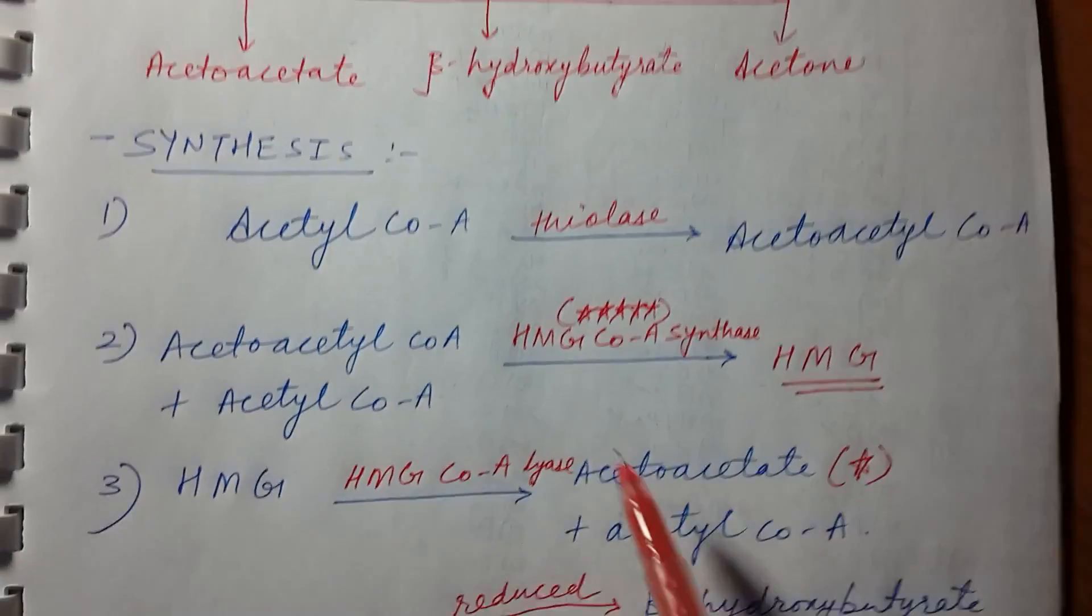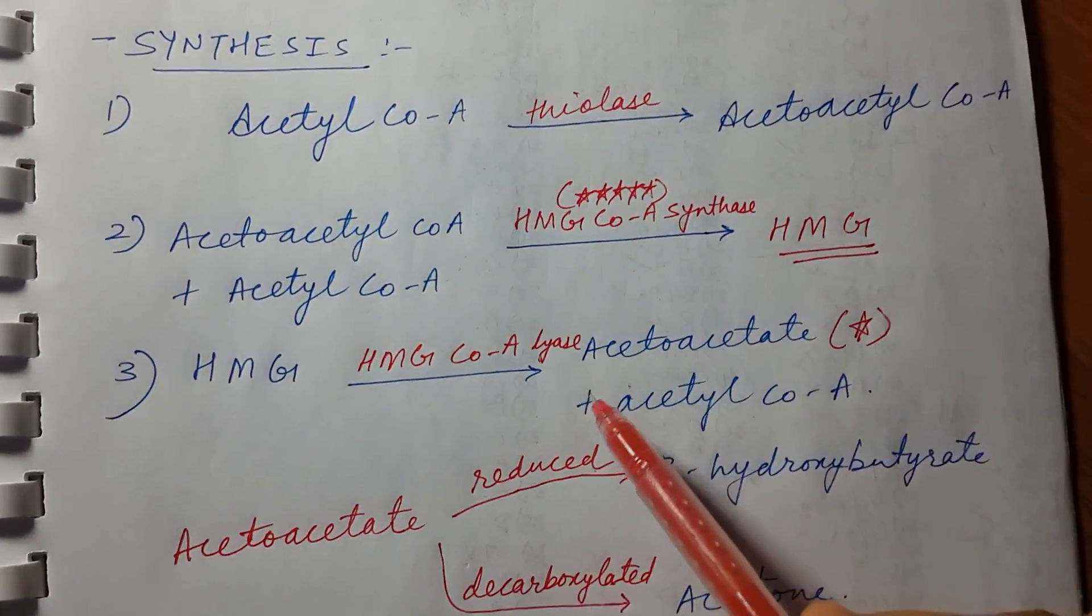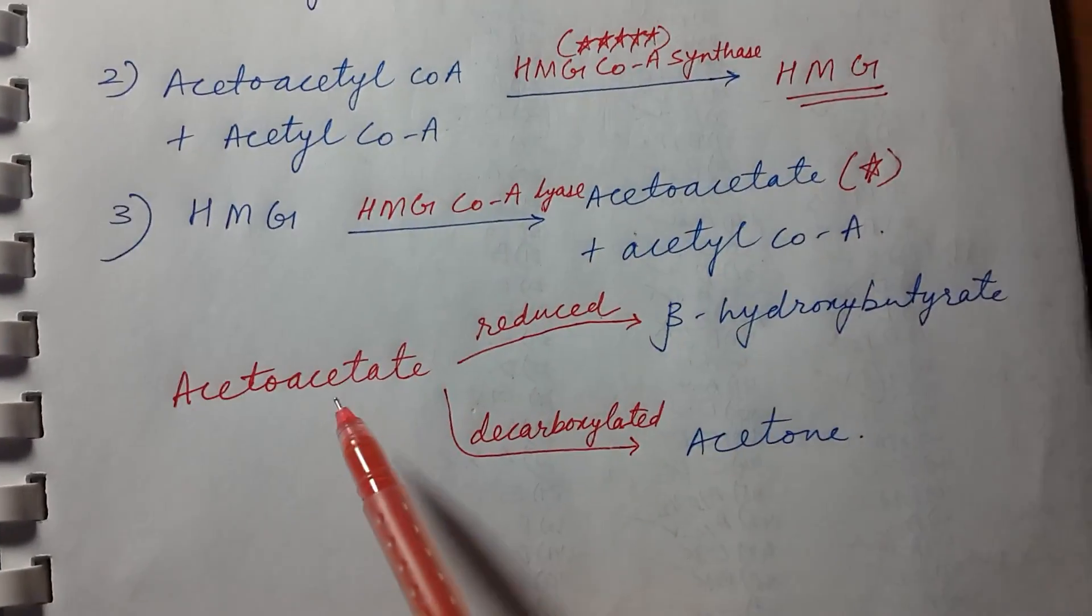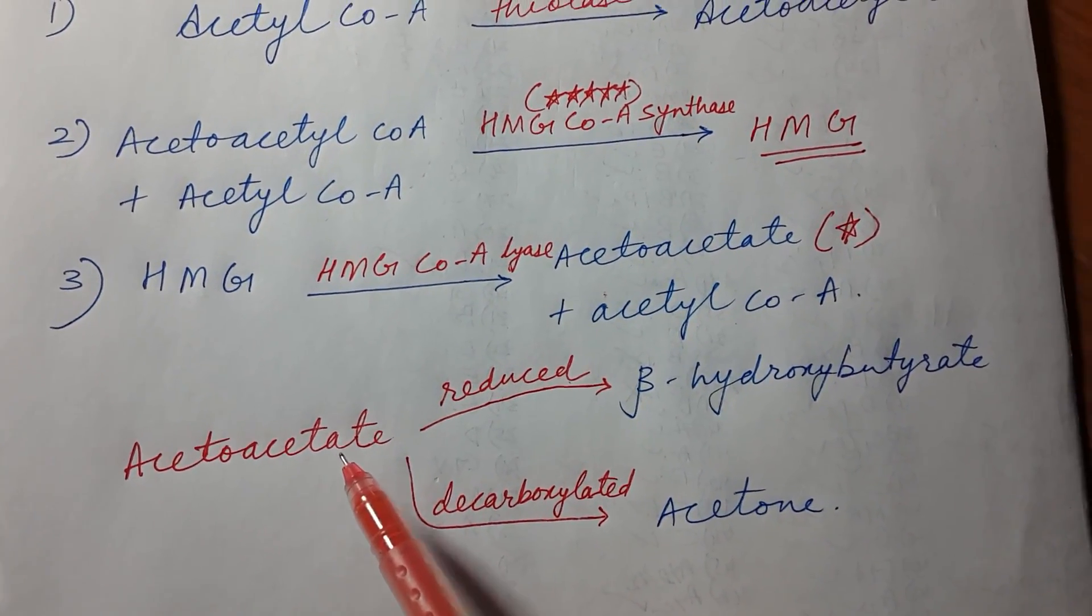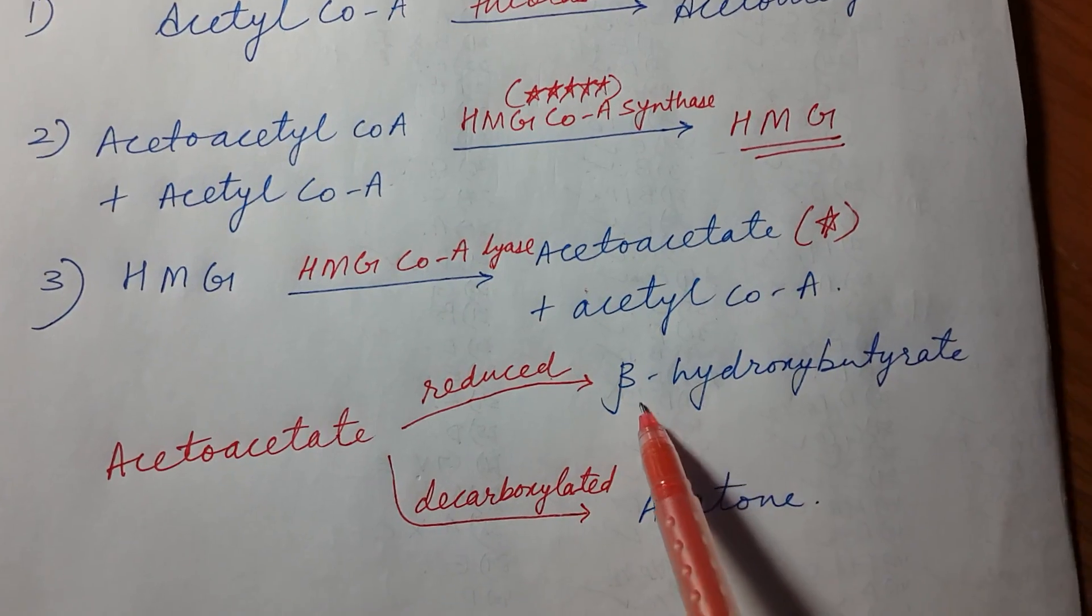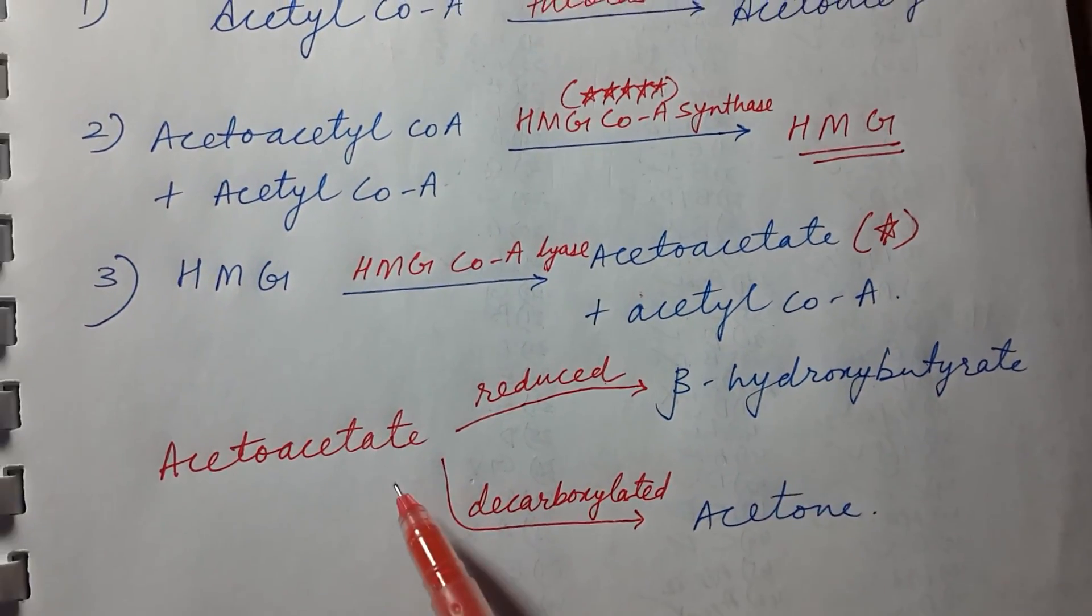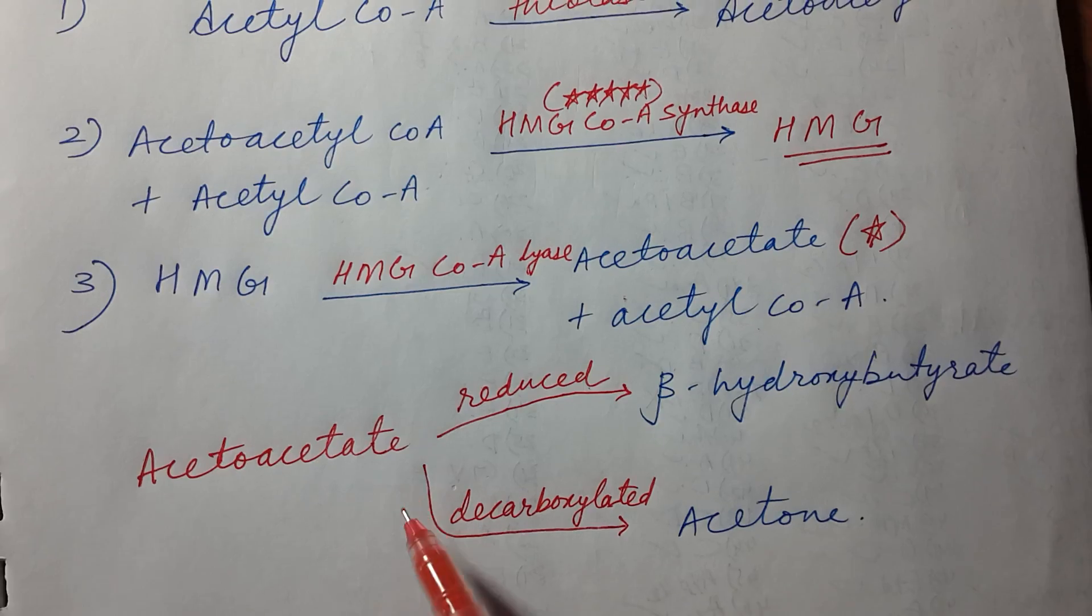Now there are two fates for this acetoacetate. The acetoacetate can be reduced and it will form beta-hydroxybutyrate, which is a ketone body, or the acetoacetate will be decarboxylated to form acetone, which is also a ketone body.